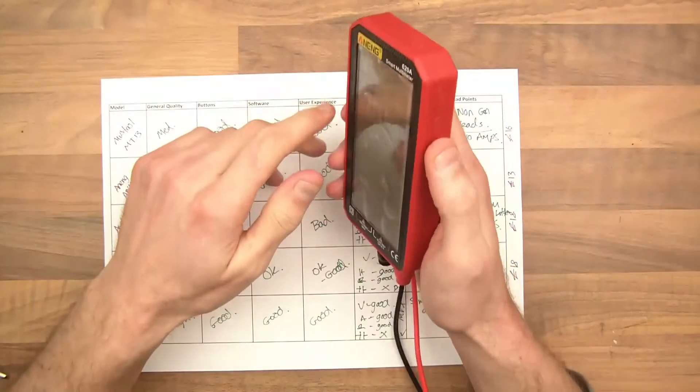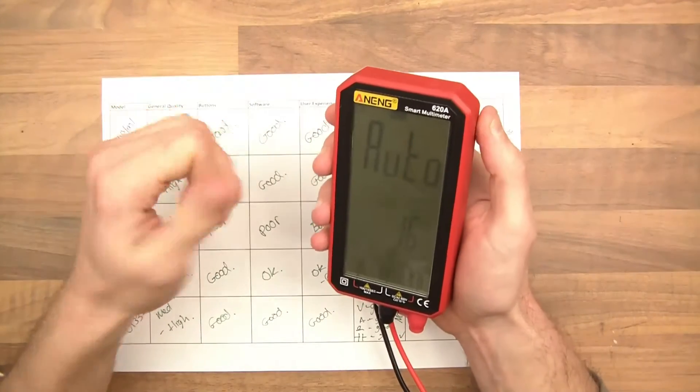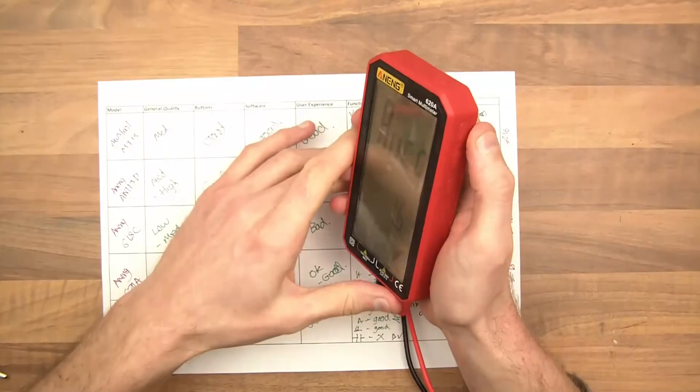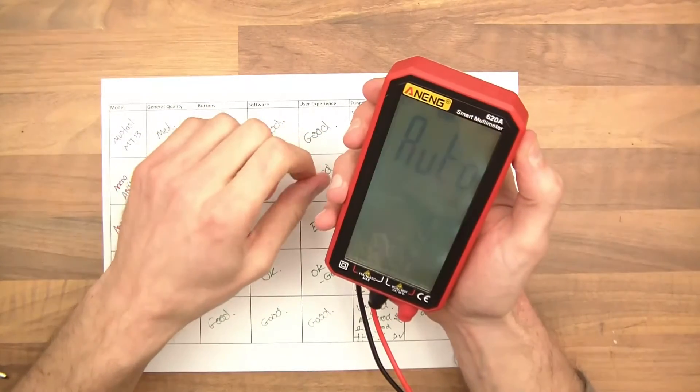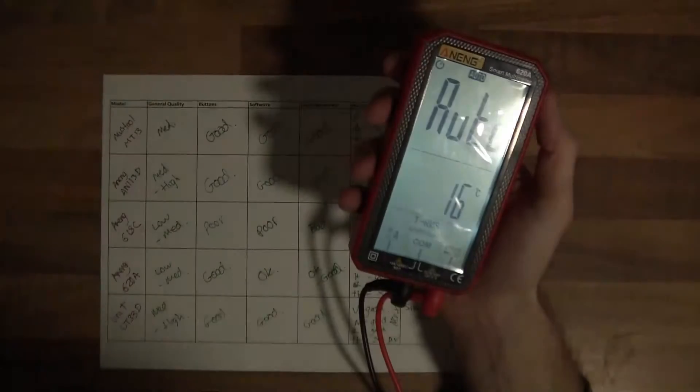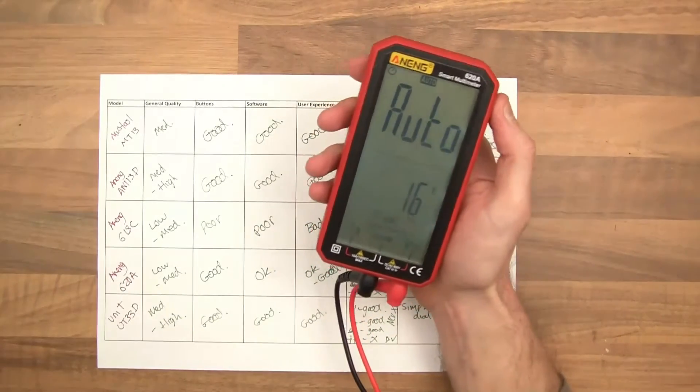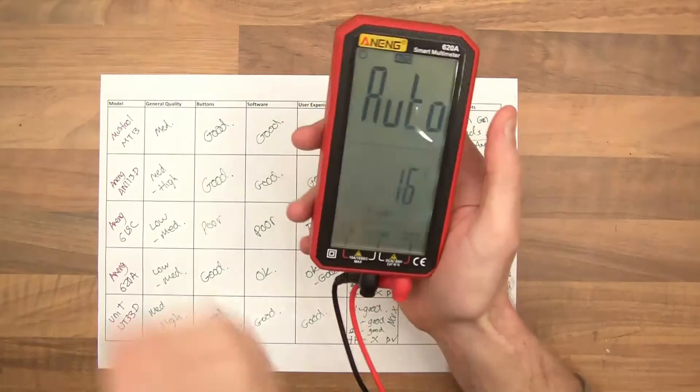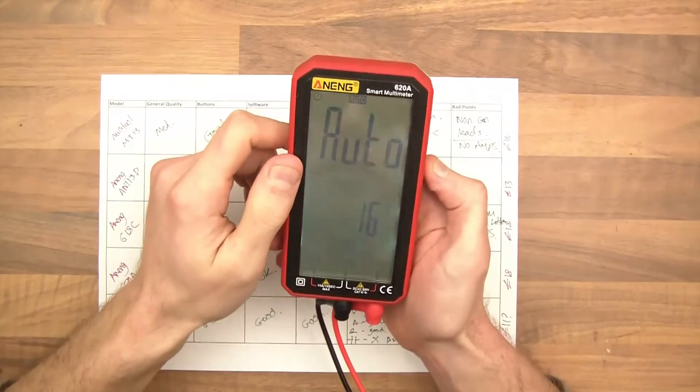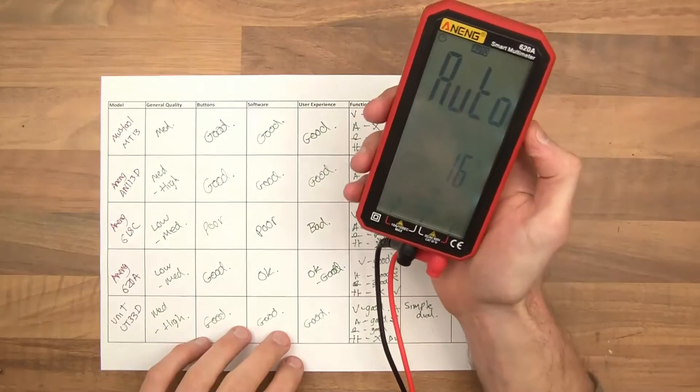The buttons are fairly good and make sense. You've got an off button. You've got this one to hold if you want to hold a value to write it down later. You've got a backlight. Hold it to get the backlight. Now that's quite good. So say you're working on electrics at midnight and there's no light at all. This would save you. Personally for me though, I don't work on electrics in the dark, but there you go. And I wouldn't either. Especially not AC voltage.